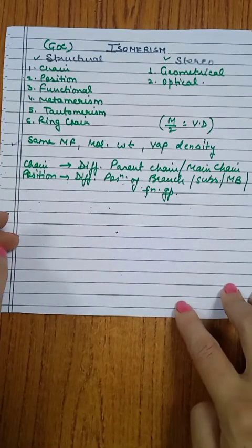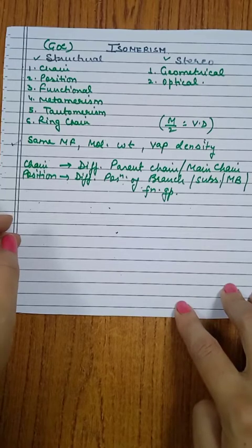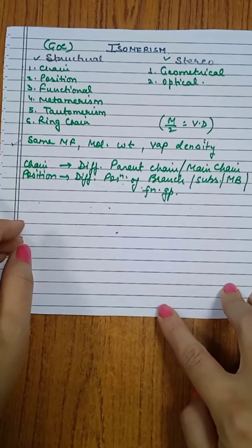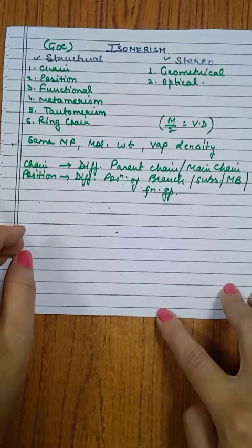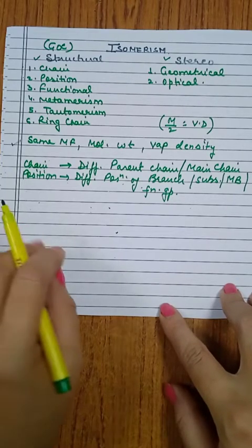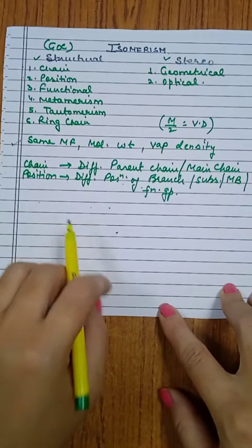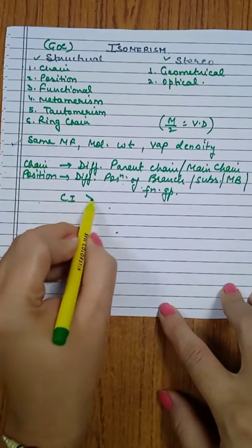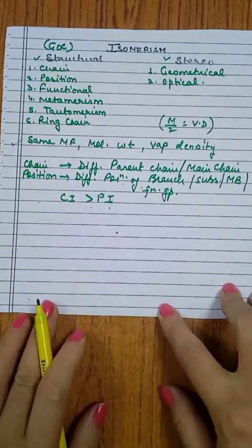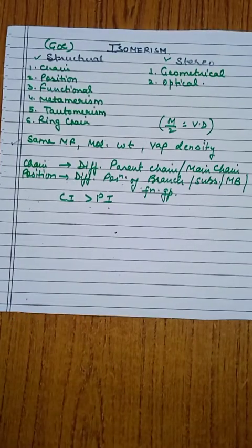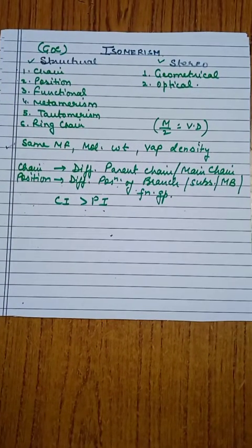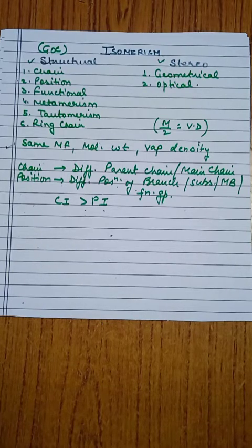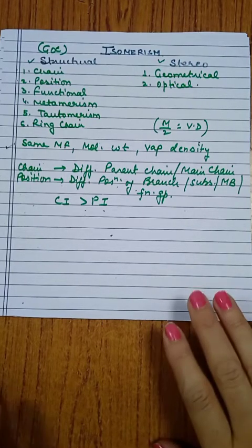In some cases there may be doubts about classification. I will give examples to identify chain and position isomers, and then we'll discuss an important rule: if a compound can be classified as both chain and position isomer, chain isomers are always given priority over position isomers. So whenever priority is involved, chain isomers take precedence over position isomers.